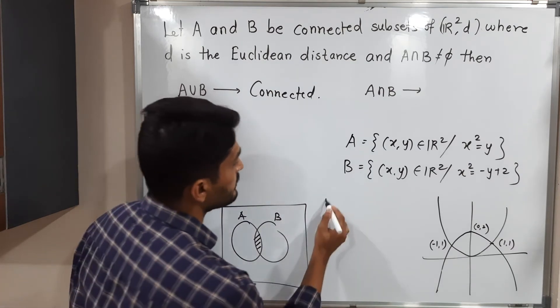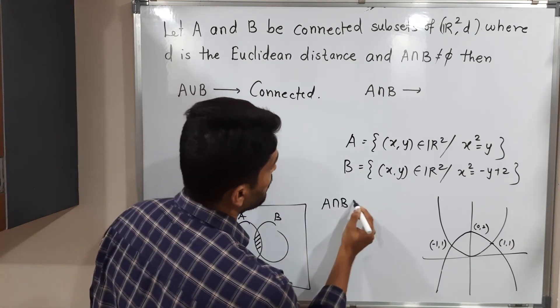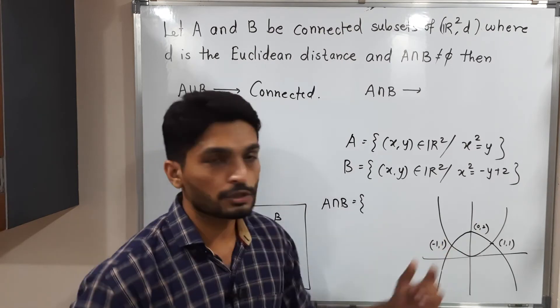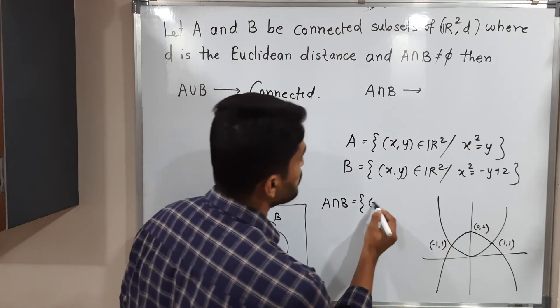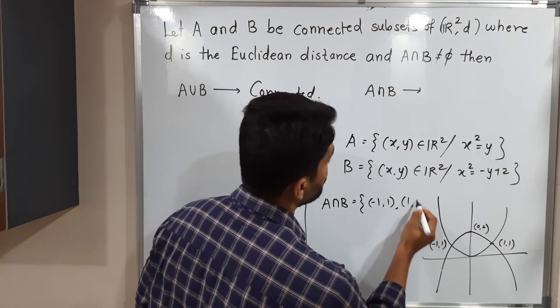But if you talk about their intersection A intersection B, in the intersection only two points come: the first one is (-1,1) and the second point is (1,1).